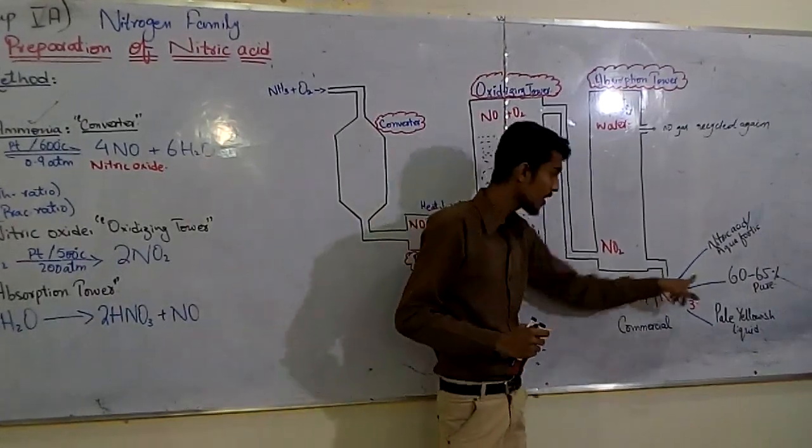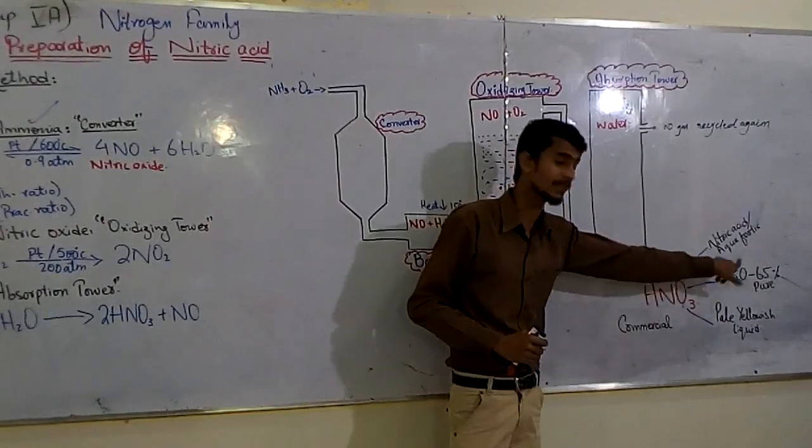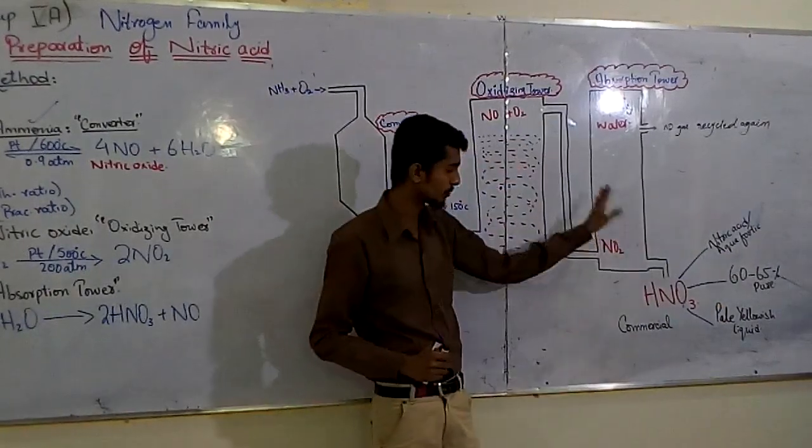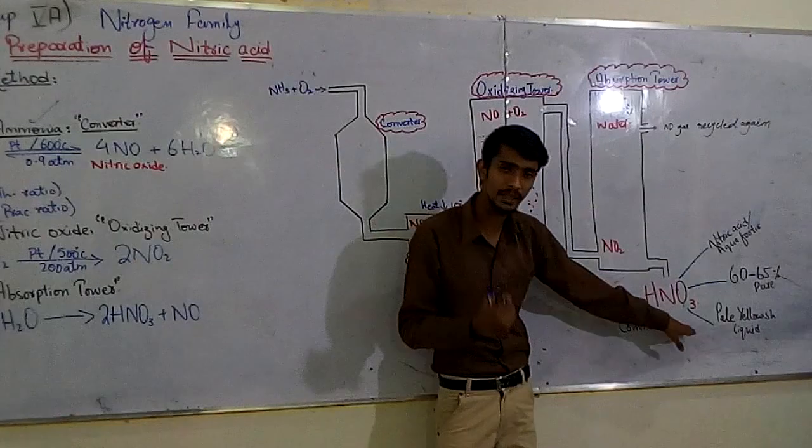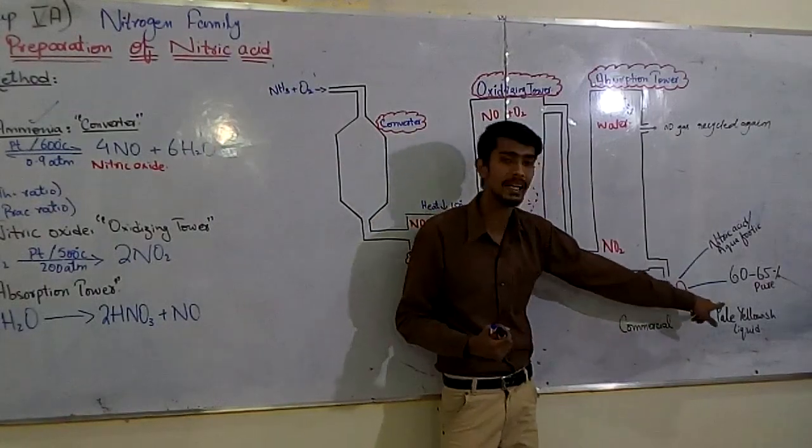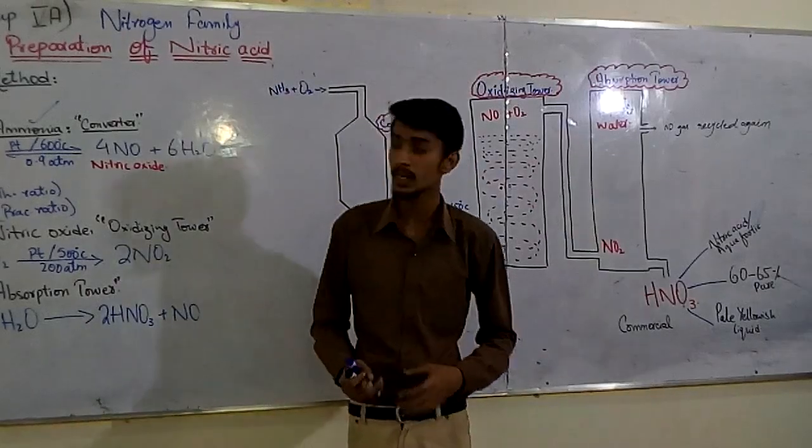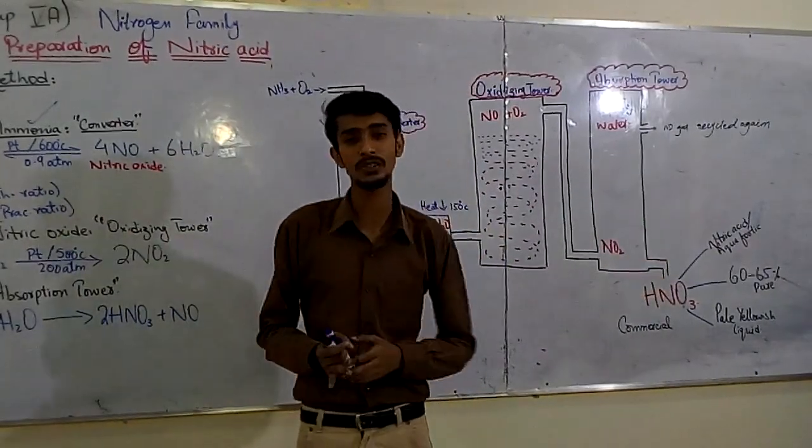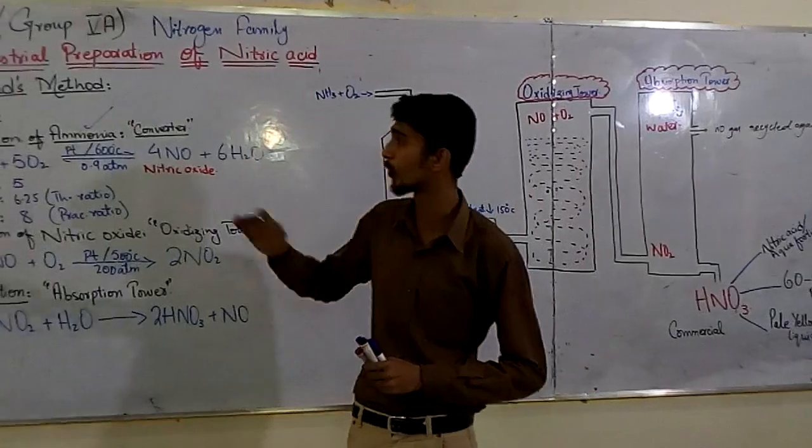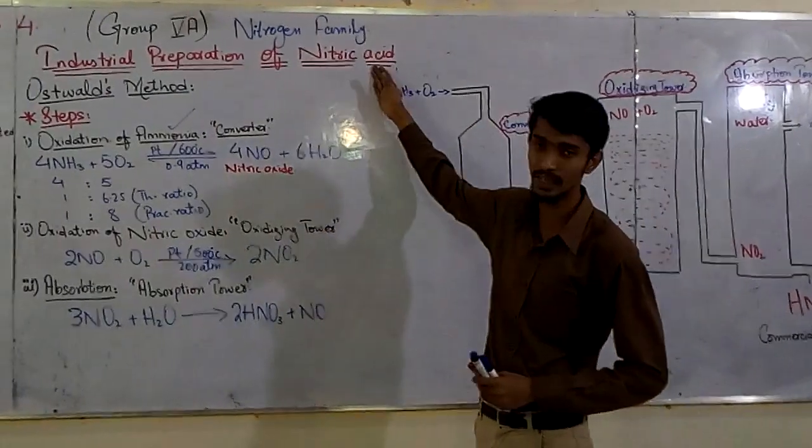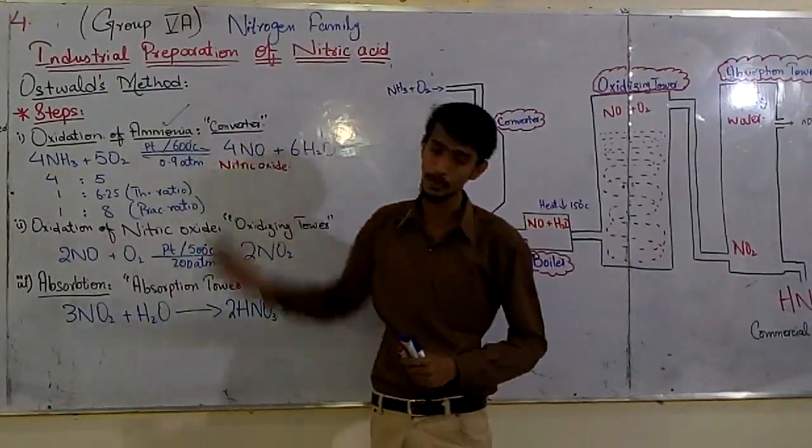The concentration in the primary steps, when we first prepare them, is normally 60 to 65% nitric acid from this process. So this is the complete process for the industrial preparation of nitric acid, which is also known as the Oswald's method.